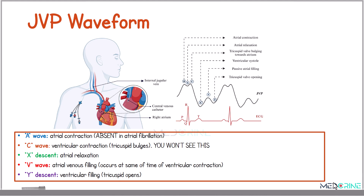Let's break down each component of the jugular venous pressure waveform. The A wave marks atrial contraction and is absent in atrial fibrillation. The C wave represents bulging of the tricuspid valve during early ventricular contraction, and is typically not visible. The X descent reflects atrial relaxation. The V wave marks venous filling during late systole. The Y descent marks ventricular filling — that is, the opening of the tricuspid valve allowing the ventricles to fill.